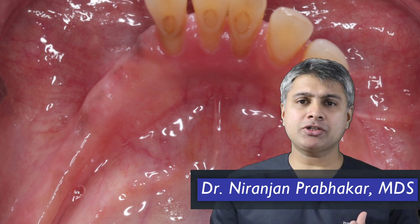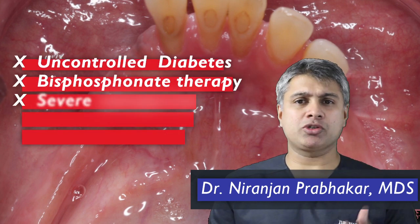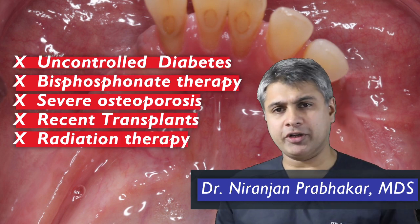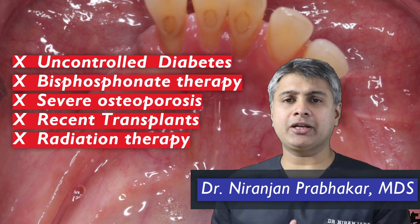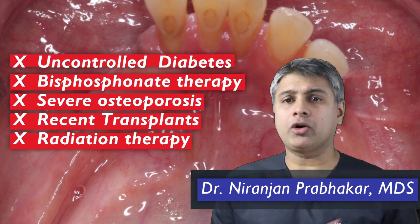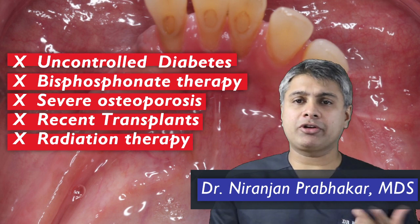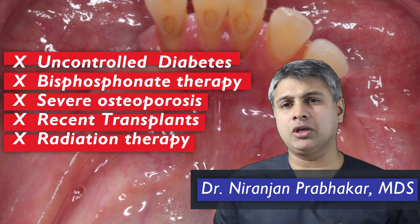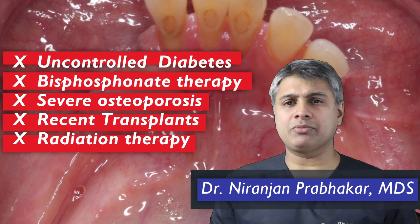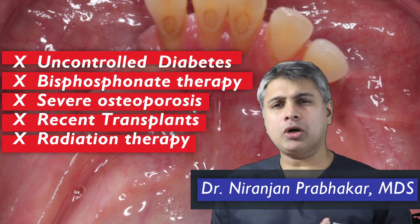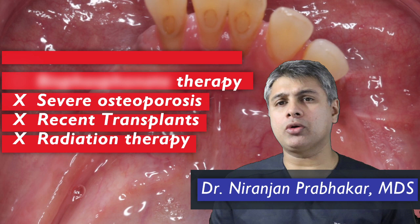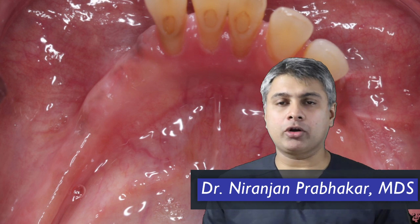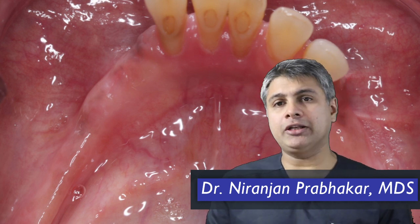However, if you are a candidate who has uncontrolled diabetes, someone who has undergone recent radiation or chemotherapy, or you are on bisphosphonate therapy, or somebody who has recently undergone a cardiac surgery, a renal surgery, or had transplants like kidney or liver transplants — such patients are usually considered a high-risk situation and dental implants are not the first choice. We would also avoid placing dental implants in someone who is a chronic smoker, although the evidence doesn't really show that implants fail in chronic smokers, but the potential for failure is always there.